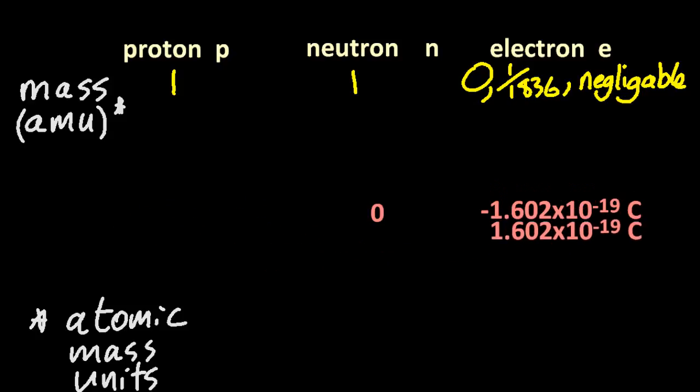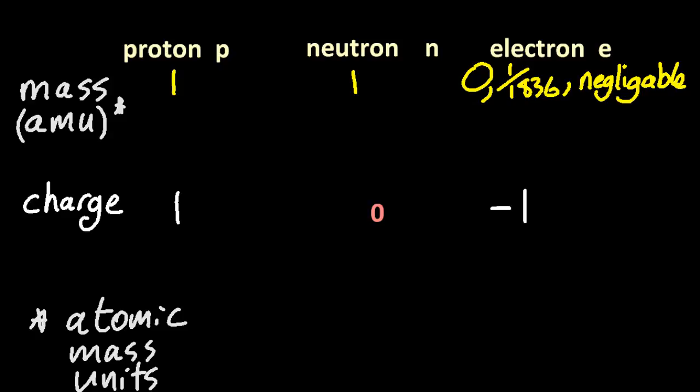So again, let's look at the relative nature of them. If we assume that a proton has a plus 1 charge, then the electron, we're going to say relatively, has a minus 1 charge, and you don't need to know the units for that.